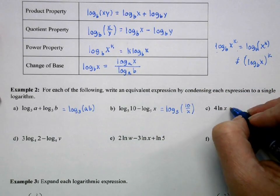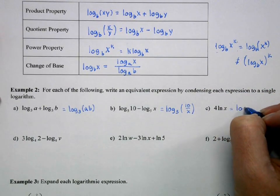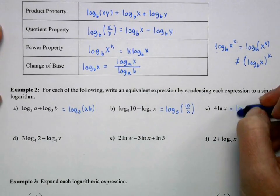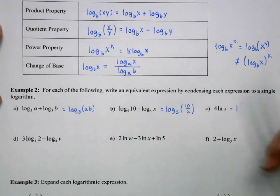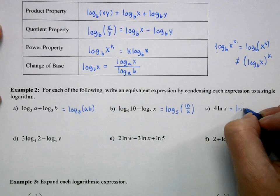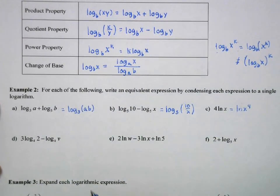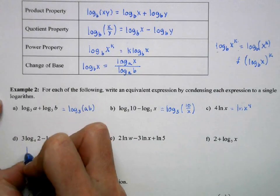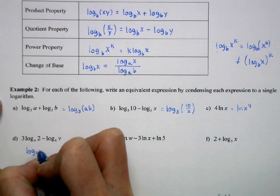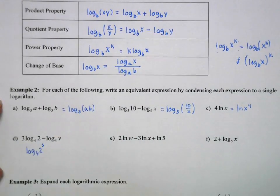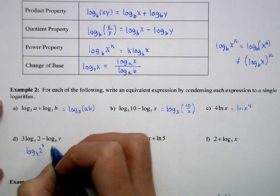This one, it's already a single one, but I want to emphasize our power property. So if I have natural log of, so 4 natural log of x becomes the natural log of x to the 4th. Okay, here I'm going to do this in two steps. I'm first going to apply the power property, because I can't combine them until that coefficient becomes an exponent.